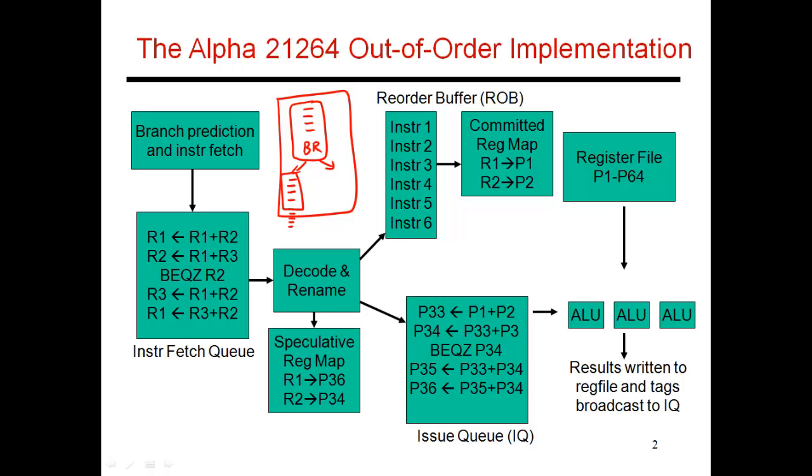Now this branch is sitting somewhere here in the reorder buffer. It's also sitting in the issue queue waiting for its input operands to be made available. At some point, those inputs are made available, so the branch proceeds. It goes to the ALU stages, does its math, figures out where the branch should really be going. At this point, it discovers that the branch had been previously mispredicted. I've gone and fetched the wrong instructions.